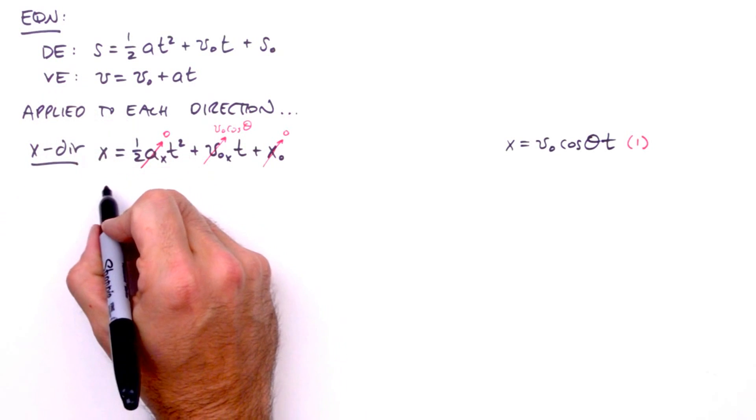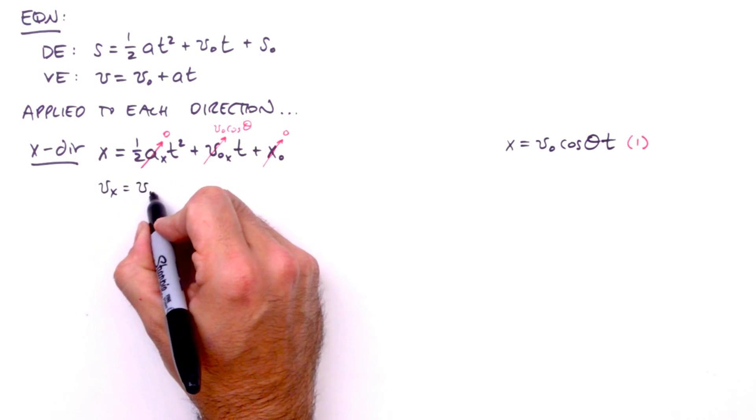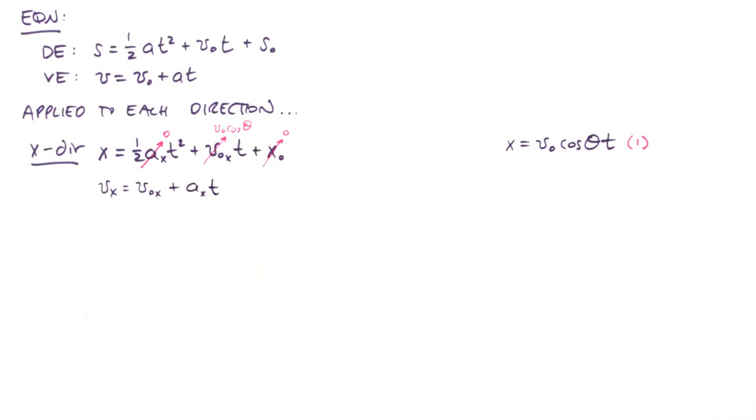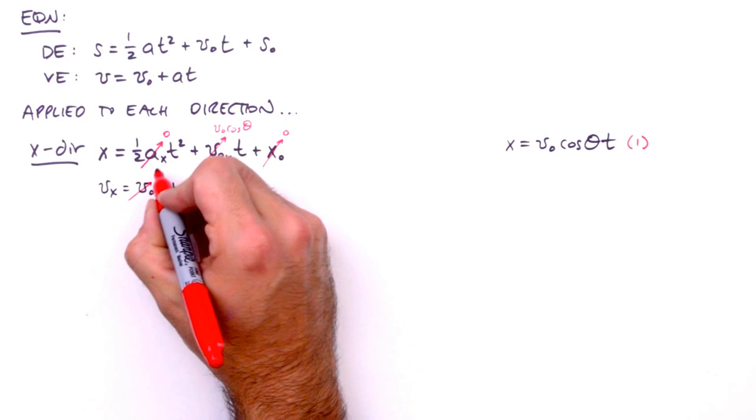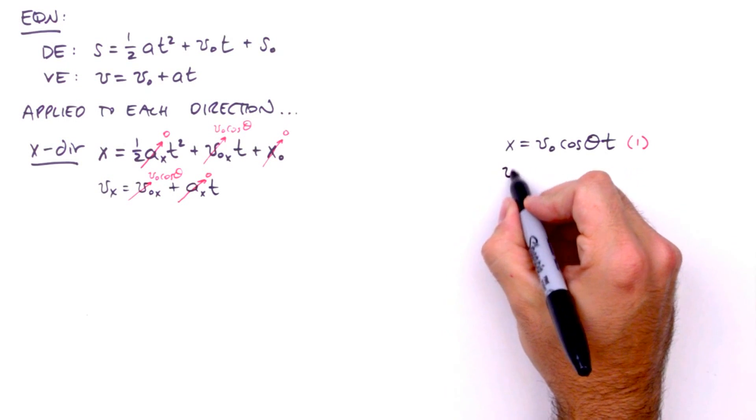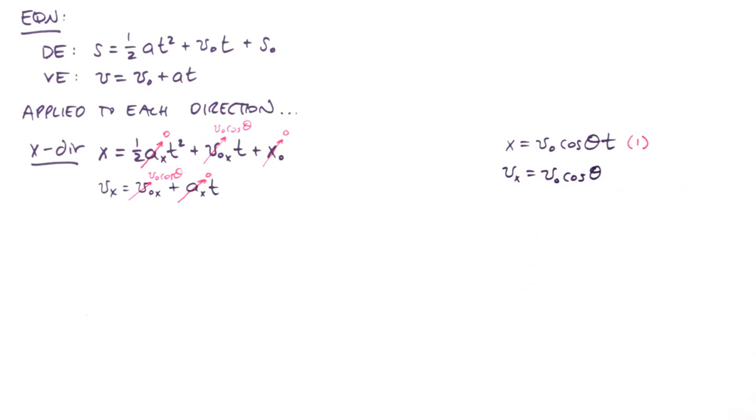Now we apply the velocity equation to the x direction and we get v sub x equals v sub o sub x plus a sub x times t. We'll set v sub o sub x to v sub o cosine theta, and again, the horizontal acceleration of a projectile is zero. So, the velocity equation in the x direction simplifies to v sub x equals v sub o cosine theta. We'll label this equation two and set it aside.